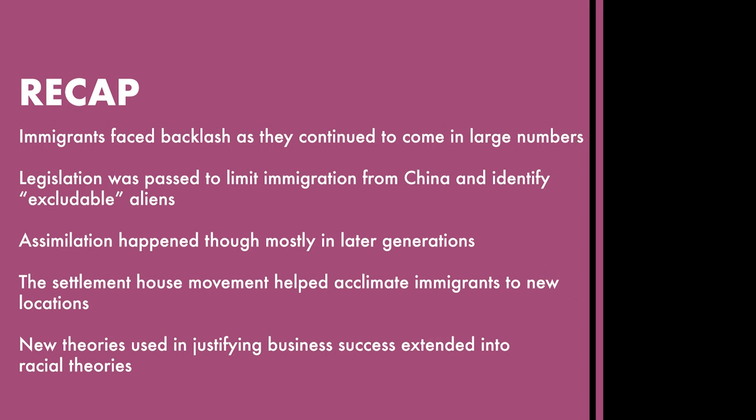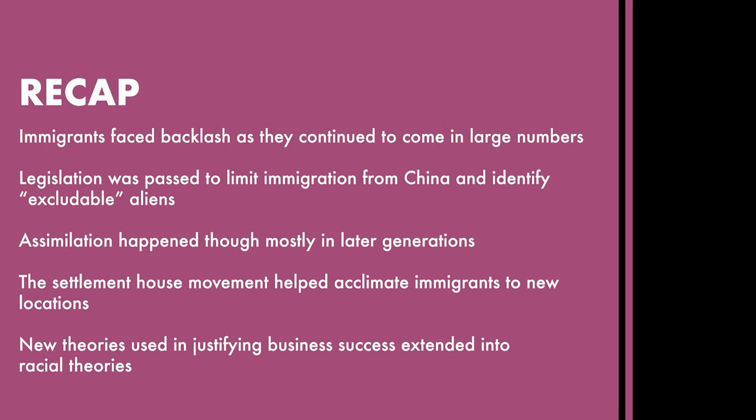Spencer also applied these concepts to business, defending the monopolistic size some companies attained at the expense of smaller competitors. In recap: immigrants faced backlash as they continued to come in large numbers; legislation was passed to limit immigration from China and identify excludable aliens; assimilation happened, though mostly in later generations; the settlement house movement helped acclimate immigrants to new locations; and social Darwinism used in justifying business success extended into racial theories.